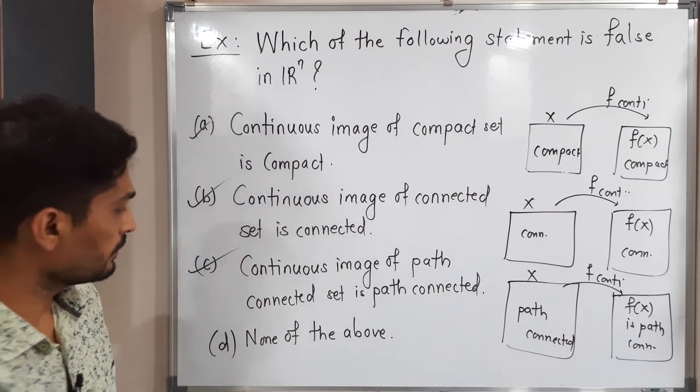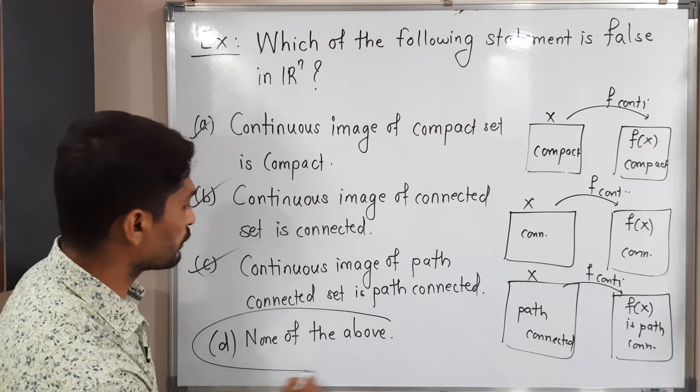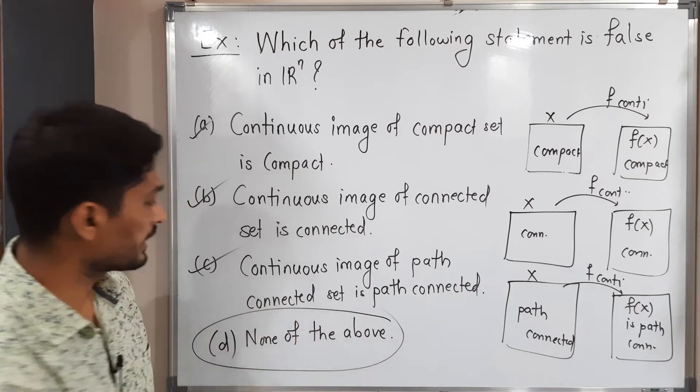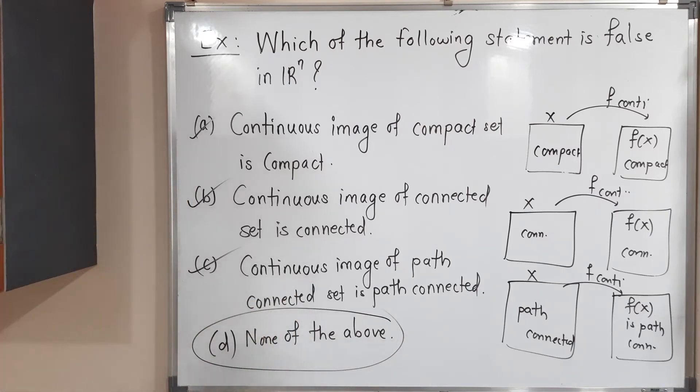So what is wrong? Since all the above statements are correct, the only remaining option is 'none of the above' — that is the correct option. Let us discuss one more example.